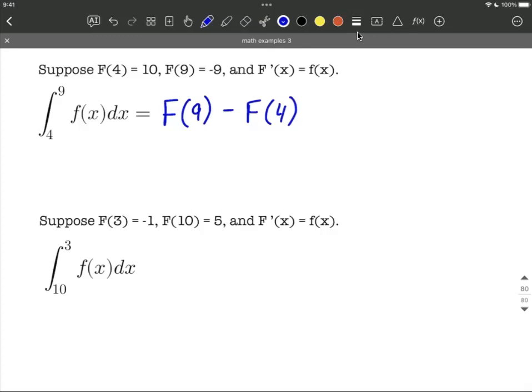So big F of 9 minus big F of 4. Now, based on the information that's been given to us, we'd want to fill in the right-hand side.